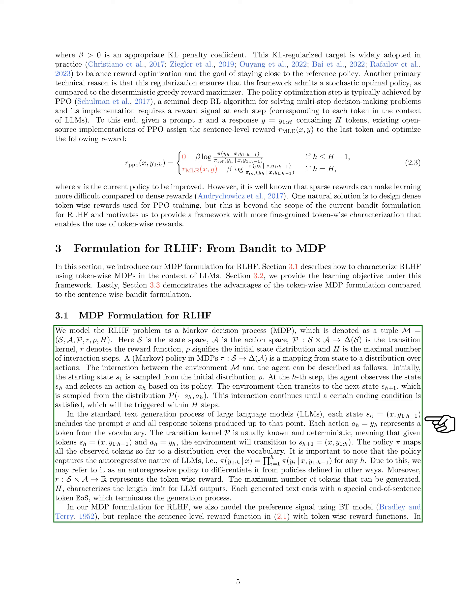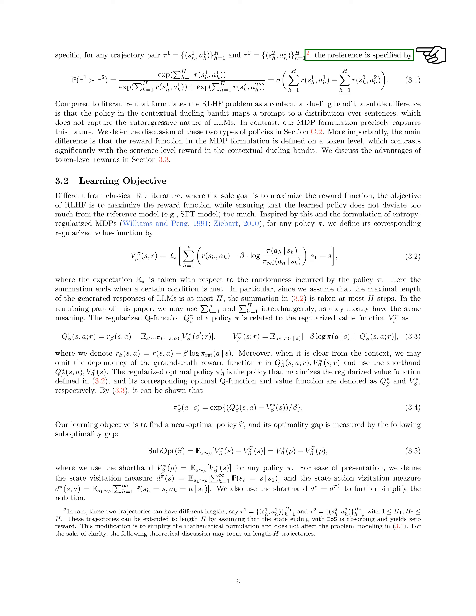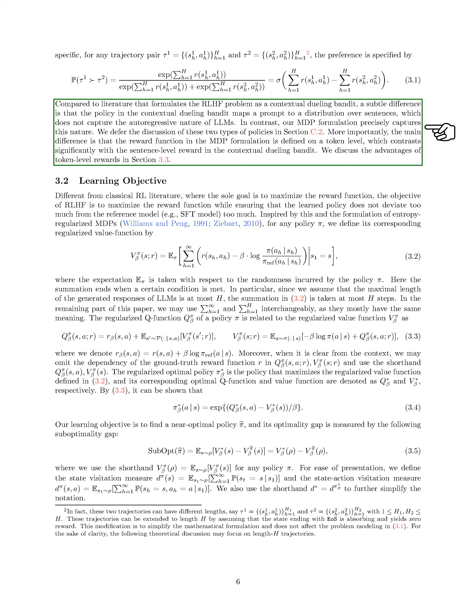We introduce a preference signal using a BT model and token-wise reward functions. The preference between two trajectories is determined based on the accumulated rewards along the trajectory. Our MDP formulation captures the autoregressive nature of LLMs, unlike other formulations that do not. Our learning objective in RLHF aims to maximize the reward function while ensuring that the learned policy aligns closely with a reference model. We define a regularized value function for policies and relate it to the regularized Q function, with the optimal policy maximizing this regularized value function.